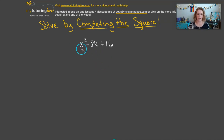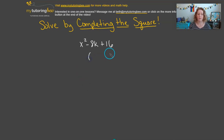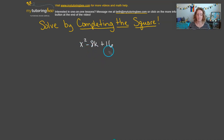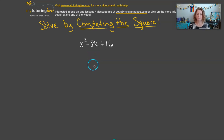Here we have a quadratic — x squared minus 8x plus 16. It's a trinomial and it is a perfect square. When we're trying to factor a perfect square, what we're going to wind up with is a binomial that is squared — that's why it's called a perfect square. Remember, when factoring any trinomial, we're looking for two numbers that multiply to give us the last term and add to give us the middle term. For perfect squares, those two numbers should be the same number.